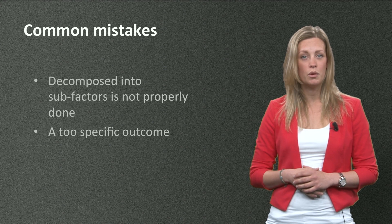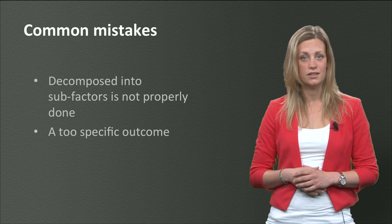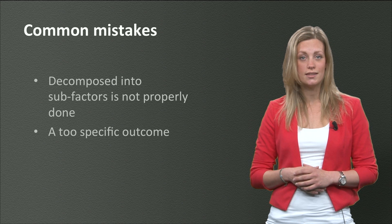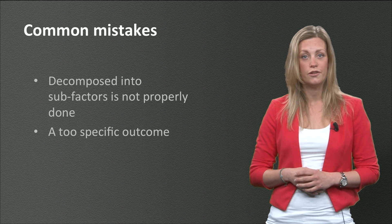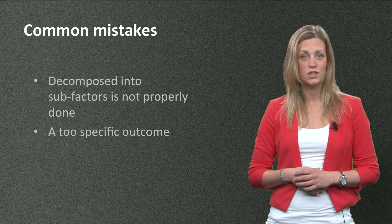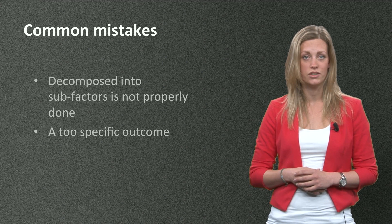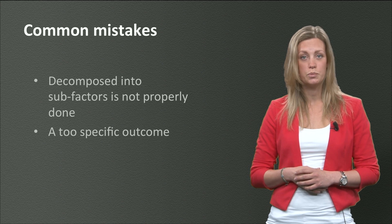There are two very common mistakes many people make when estimating. They decompose factors in sub-factors, but they do not decompose enough. Think about the train example of Fieke earlier in this video. Just stating that there are 250 people on a train does not make sense. People might disagree and come up with another number. This needs to be further decomposed into sub-factors, like the number of carriages in a train or the number of seats per carriage.